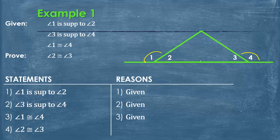Therefore, angle 2 is congruent to angle 3 because if two angles are supplementary to congruent angles, then they are congruent to each other. Easy enough.